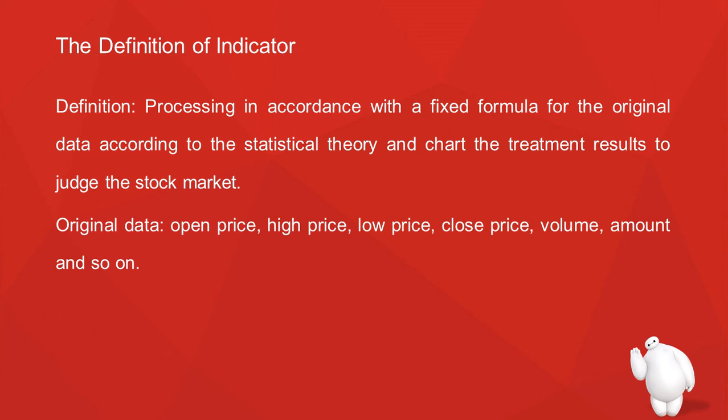Now let's cover the definition of indicators. Indicators are processed using fixed formulas based on original data, statistical theory, and charts to judge the stock market. The original data includes: open price, high price, low price, close price, volume, amount, and so on. We'd better check the close price, because it is extremely important for judging the market. Close price and volume are both very important.